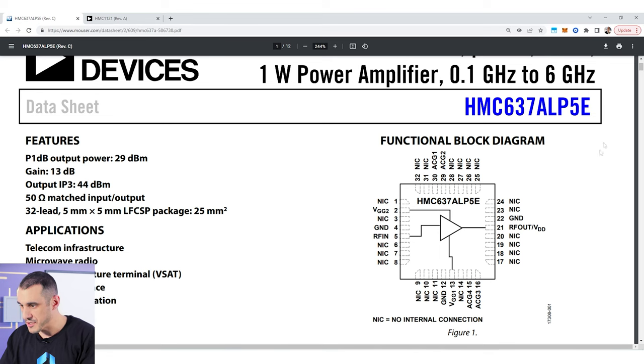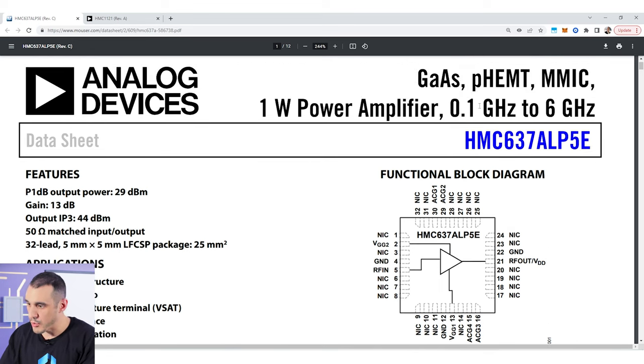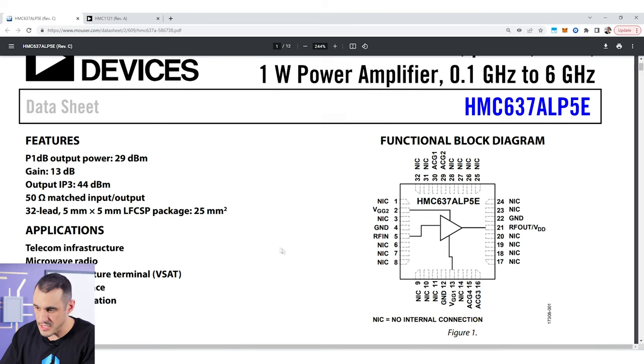So let's take a look at some example components here. What I'm going to do is show you a couple of components from Hittite Microwave which is now owned by Analog Devices. Now I really like their microwave components and they're a good example of some of the things that you will typically see from RF integrated circuits. So here I'm taking a look at the HMC 637. This is a broadband power amplifier outputting at up to one watt.